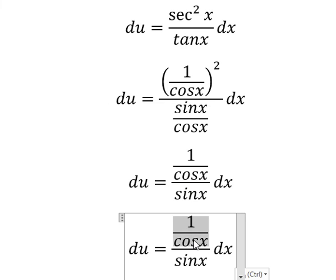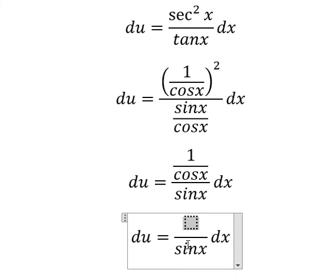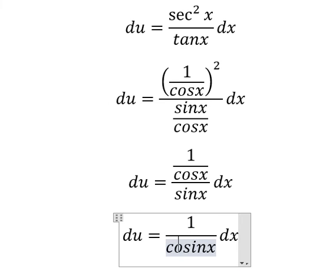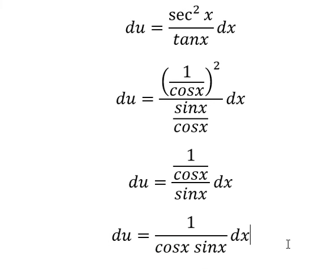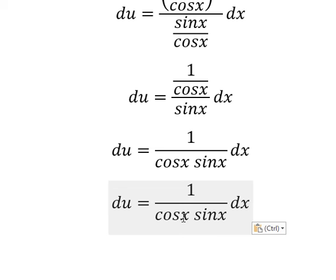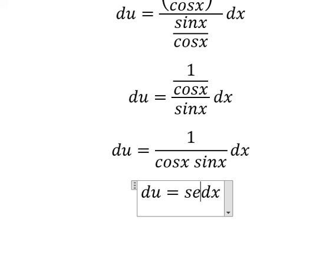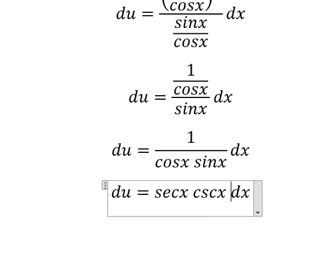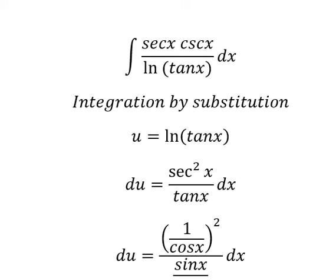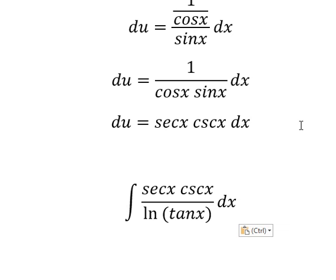1 divided by cosine x we have secant of x, 1 divided by sine x we have cosecant of x. So we have secant of x cosecant of x. Now let's go here, so this one we change for u and this one we change for du.